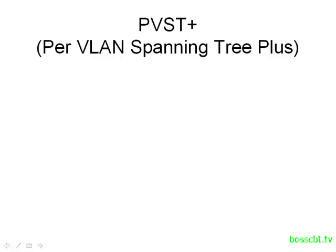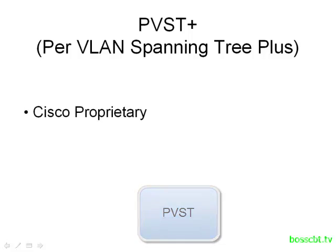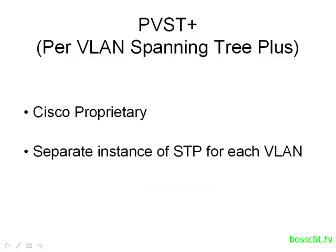The first new flavor of spanning tree is known as Per VLAN Spanning Tree Plus. Sometimes this is written out as PVST+ and sometimes it's written without the plus. This is a Cisco proprietary protocol, and what it does is it creates a separate instance of spanning tree for each VLAN. Originally, all VLANs belong to a single instance of spanning tree, so if you think about the port state of a single port on a switch — it could be forwarding or blocking — whatever that state is, it would apply to every VLAN associated with that particular port.